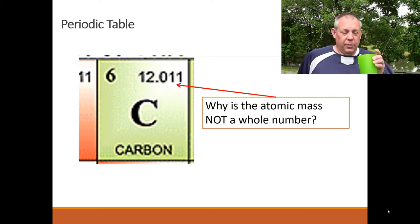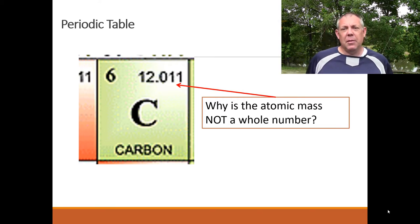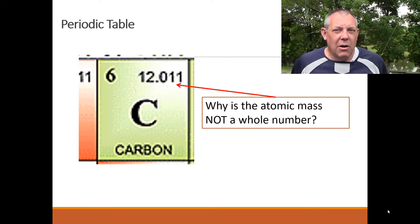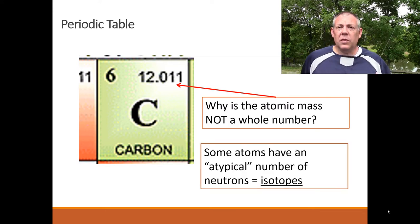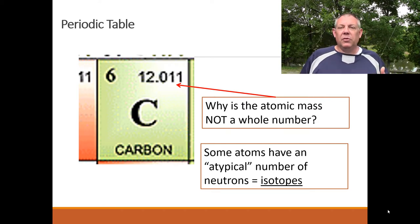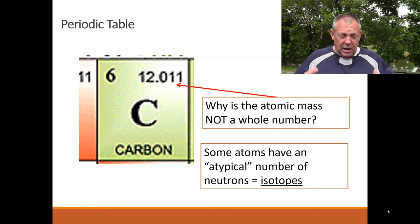Why is the atomic mass not a whole number? The periodic table lists carbon as 12.011, not 12. The answer is that not all carbon atoms have six neutrons. Most do — that's the most energetically stable form — but some have a different number of neutrons. When an atom has an atypical number of neutrons, we call that an isotope. I'm a biologist, not a chemist, so I'm explaining it the way it works in my brain.